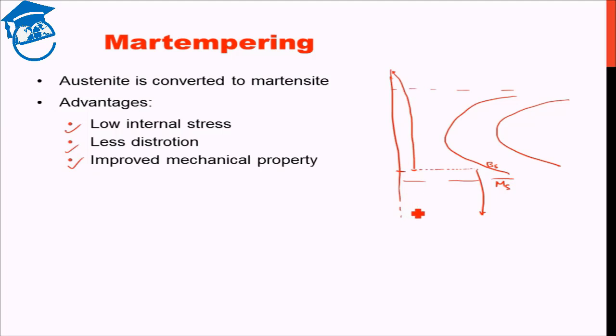If we just quench it directly, then a lot of internal stress is generated and a lot of distortion, the shape is distorted. But this intermediate isothermal hold gets rid of those problems. There will obviously still be some internal strain, but the amount of internal strain and the amount of distortion will be much less than hardening process.